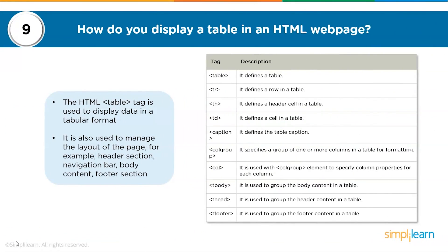The ninth question: how do you display a table in an HTML web page? A table can be created using the table tag, and it is also used to manage page layout — for example, header section, navigation bar, body content, photo section, etc. Key HTML tags for tables include: table (defines the table), tr (defines a row), th (header cell), td (data cell), caption (defines a caption), colgroup (specifies a group of columns for formatting), col (specifies column properties), tbody (groups body content), thead and tfoot (used for header and footer content respectively).